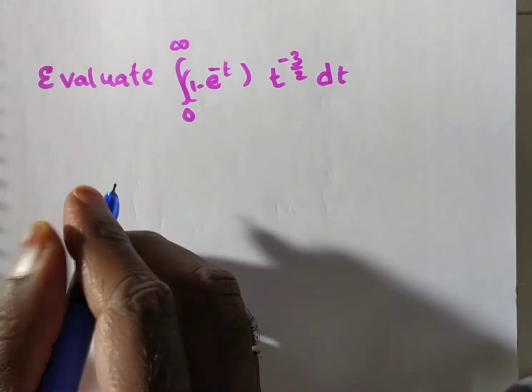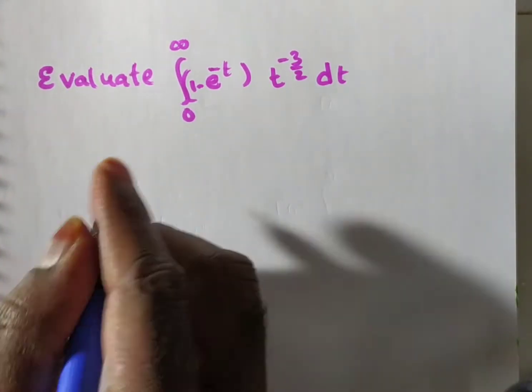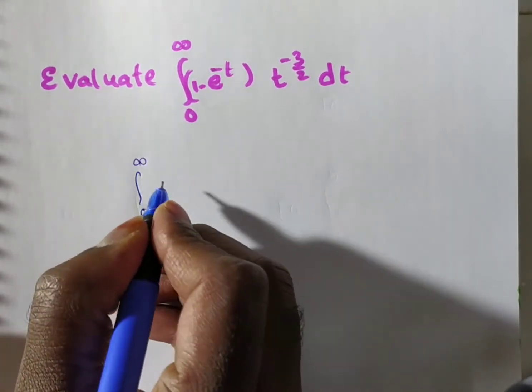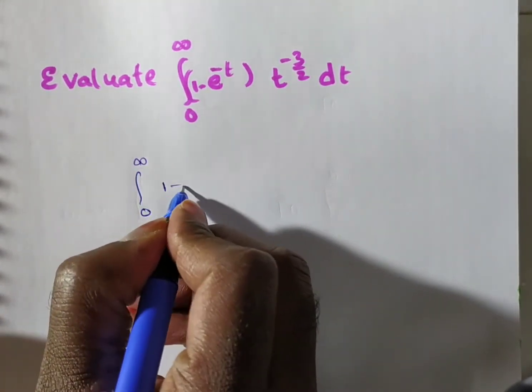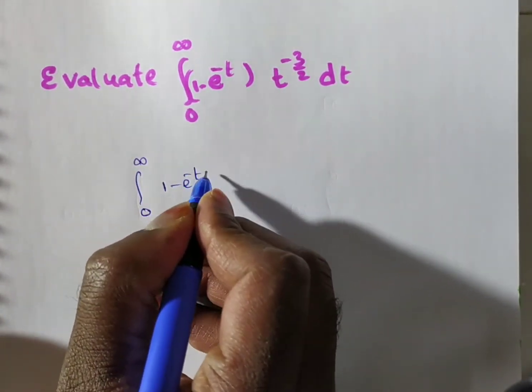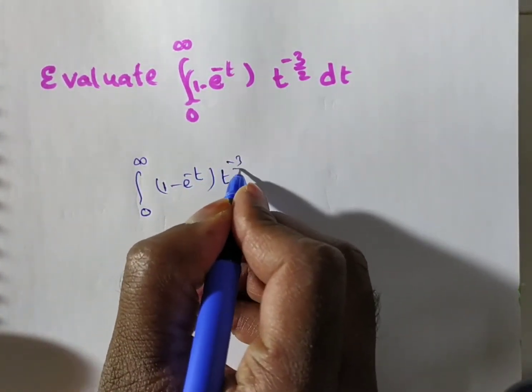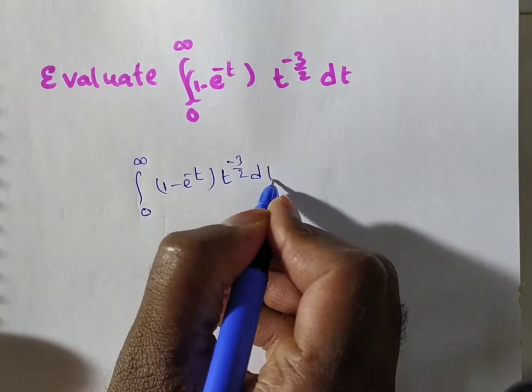Now observe: we have to evaluate the integral from 0 to infinity of (1 minus e to the power minus t) into t to the power of minus 3 by 2, dt.